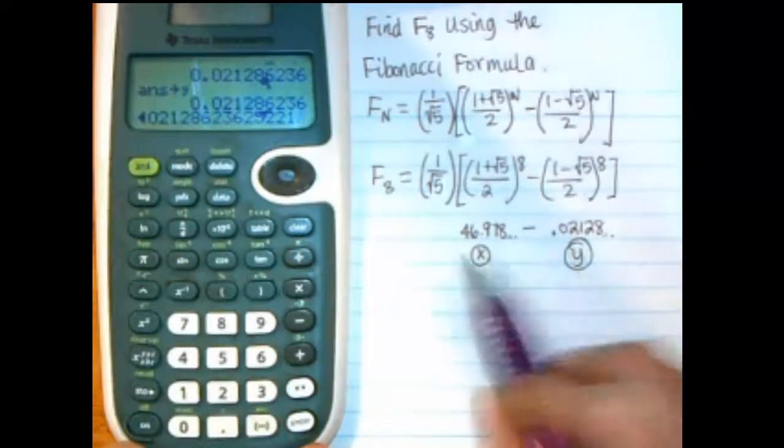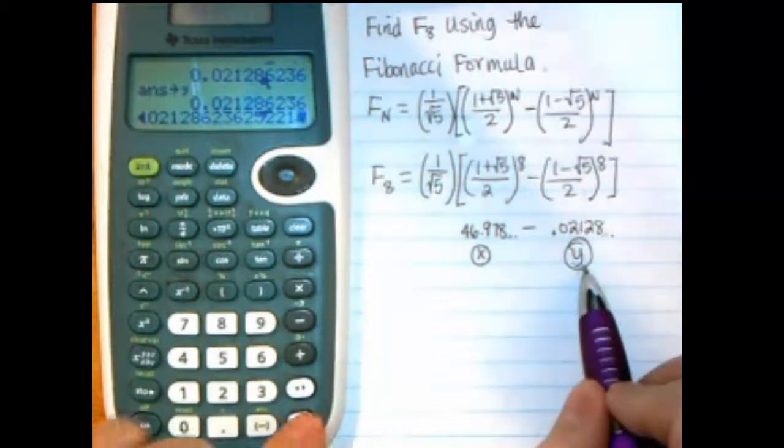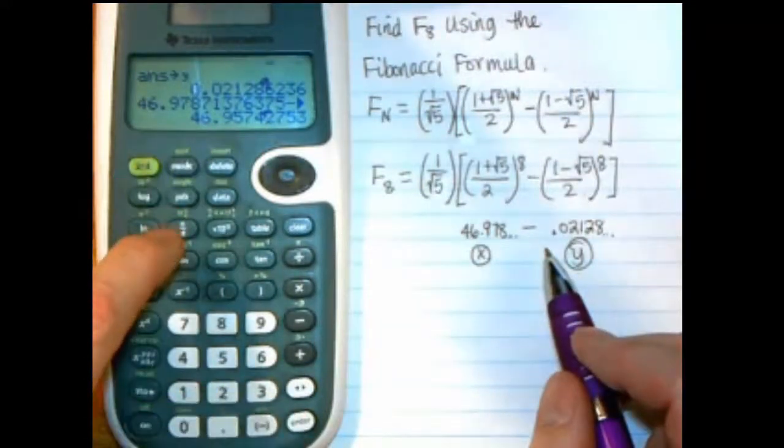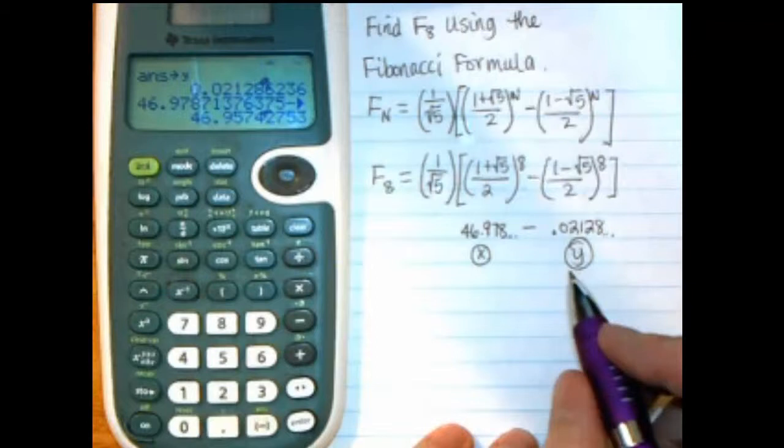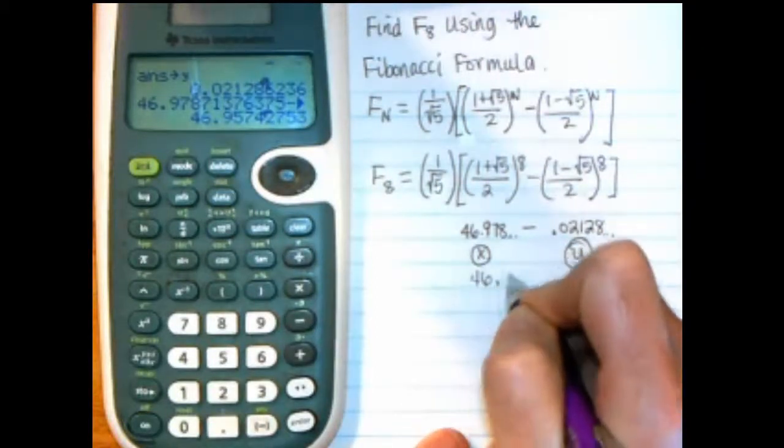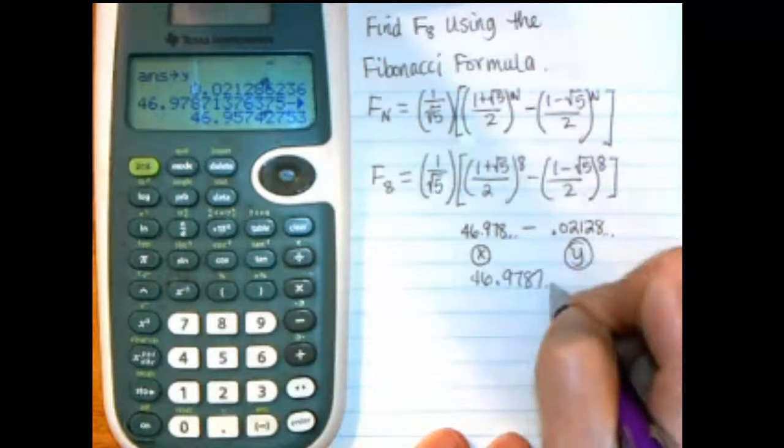So I go down to 2 and push enter, and it shows me that value I had for the second variable, the Y here. So then I just say enter again, and now it actually did the subtractions. 46, yeah. So I have 46.9787, and it goes on.